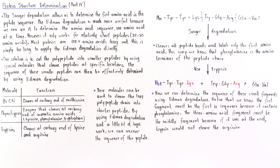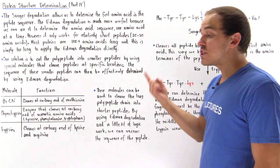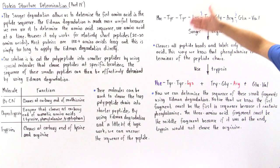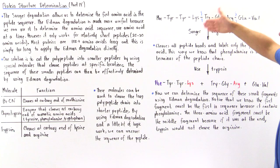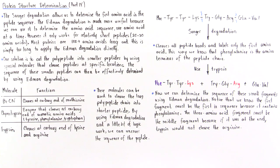Suppose we have the following nine amino acid polypeptide: phenylalanine, tyrosine, tyrosine, lysine, tryptophan, glycine, arginine, glutamine, and valine. To determine the first amino acid in our sequence, we subject the peptide to the Sanger degradation, which cleaves every peptide bond but only labels the first amino acid. This tells us that phenylalanine is the amino terminus — the first amino acid in our chain.